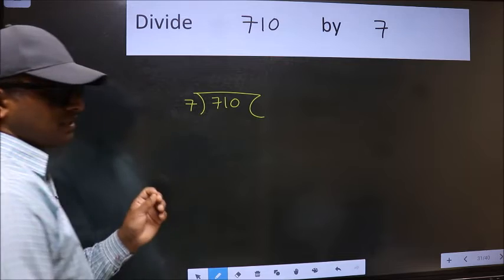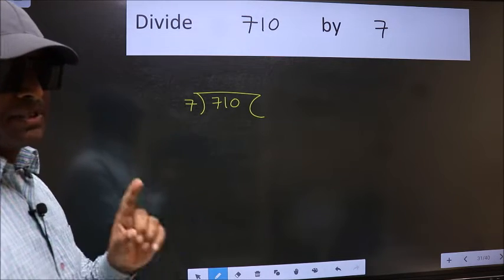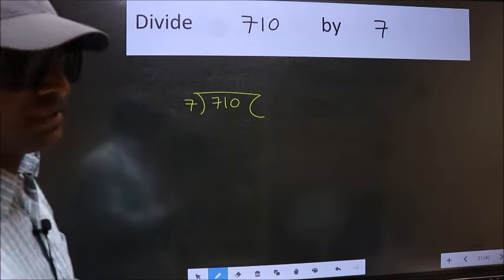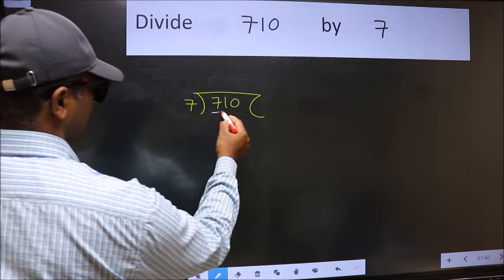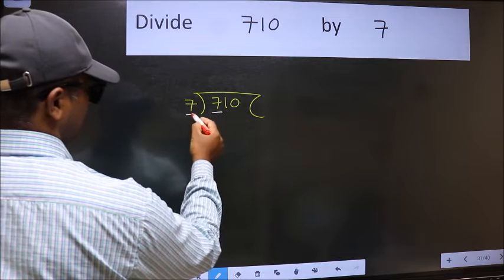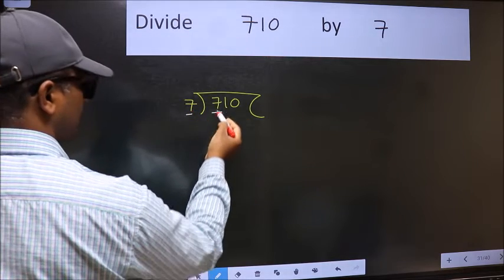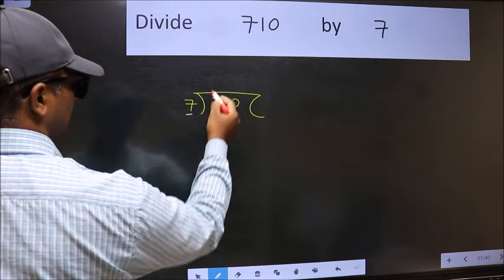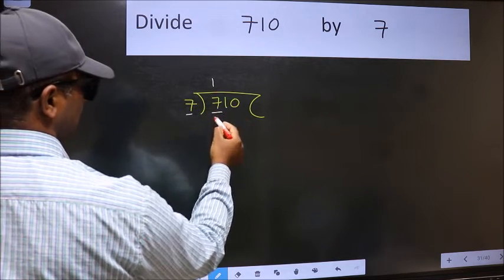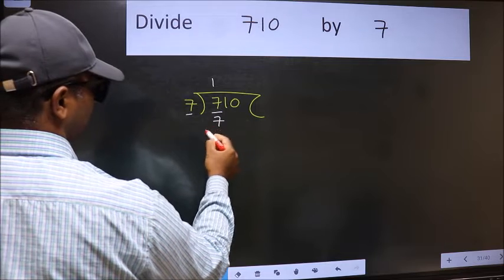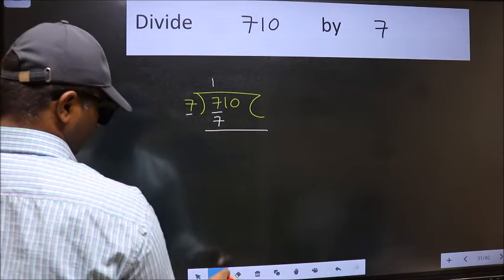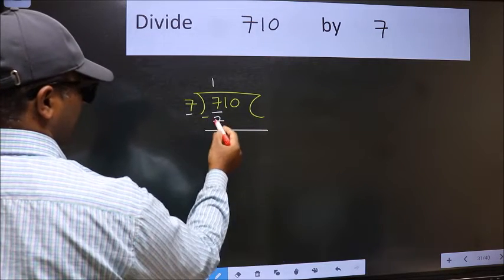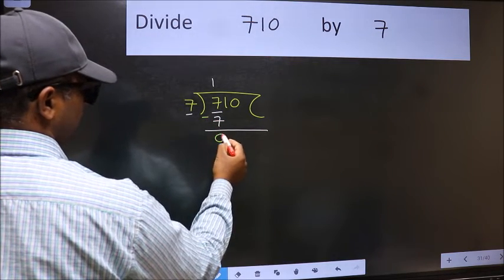This is step 1. Here we have 7 and here 7. When do we get 7 in the 7 table? 7 once is 7. Now we should subtract. We get 0.